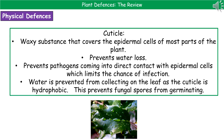The first defense mechanism we'll look at in more detail is the waxy cuticle. When writing down a physical defense for plants, don't just write 'cuticle' or 'waxy layer' — make sure you use the phrase 'waxy cuticle.' It is a waxy substance that covers the epidermal cells of most parts of the plant. It prevents water loss, which is useful for keeping water within the plant, and it prevents pathogens from coming into direct contact with the epidermal cells, reducing the chance of infection.